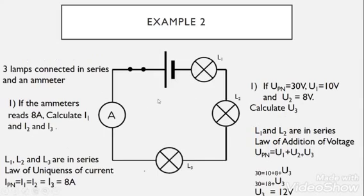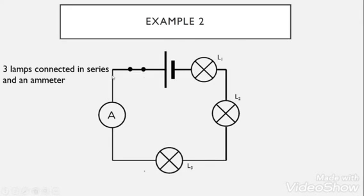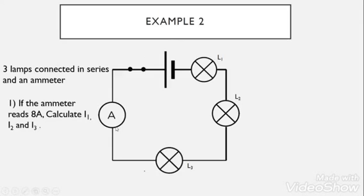Example two: here we have three lamps connected in series with an ammeter and a dry cell in a closed circuit. We know that the ammeter measures current. If the ammeter reads 8 amperes, calculate I1, I2, and I3 — the current across lamp 1, lamp 2, and lamp 3. I'll give you some time to think about it; don't forget to mention the rule.